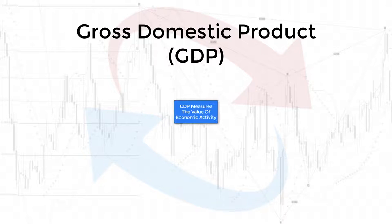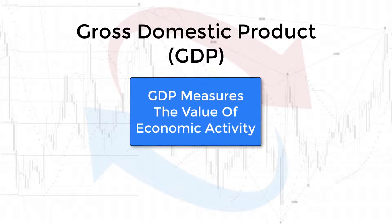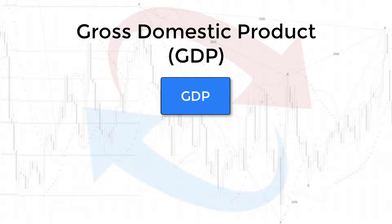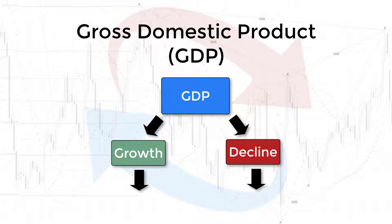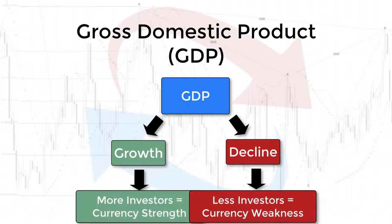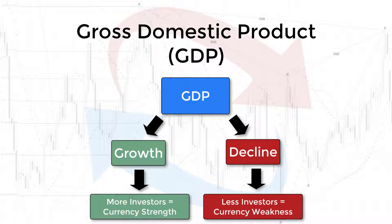Gross domestic product measures the value of economic activity within a country. GDP is the sum of the market values or prices of all final goods and services produced in an economy during a period of time. Currency strength or weakness usually follows its country's GDP growth. If a country is doing well, investors will usually flock to that country and invest because they see it as an opportunity to grow their capital.